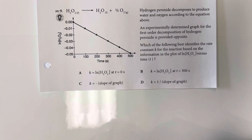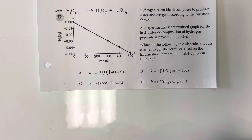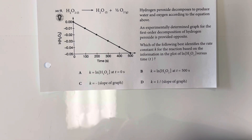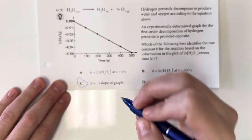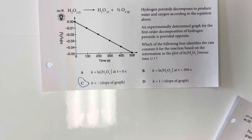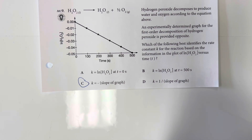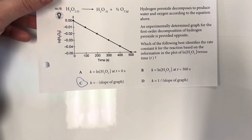Hydrogen peroxide decomposes to produce water and oxygen. An experimentally determined graph for the first order decomposition of hydrogen peroxide is provided. Which of the following best identifies the rate constant K based on the plot of the natural log of hydrogen peroxide versus time? The natural log of hydrogen peroxide is the definition where the negative slope of the graph is equal to the rate constant K for that reaction. So option choice C is that definition, so that is what we would choose.